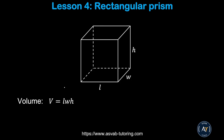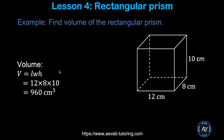Now we'll learn how to find the volume of a cube. The formula is V equals length times width times height. In this problem, the length is 12, width is 8, and height equals 10. If you multiply all of them, you get 960 cubic centimeters.